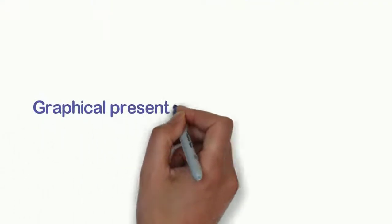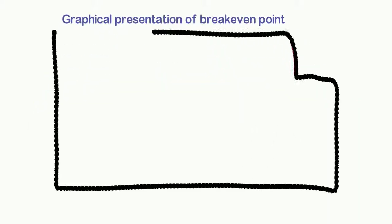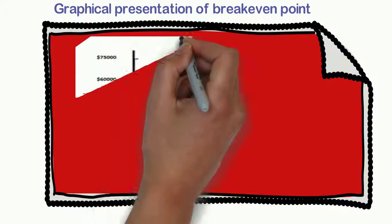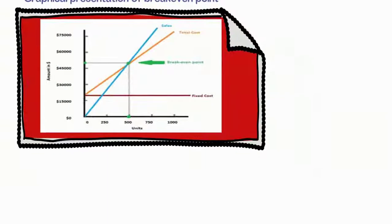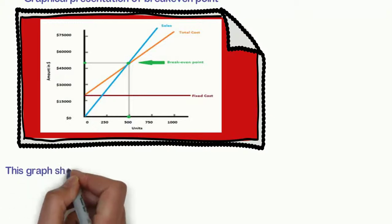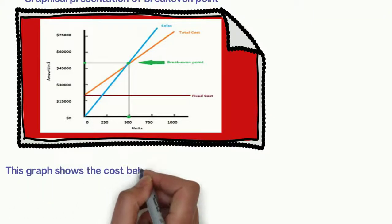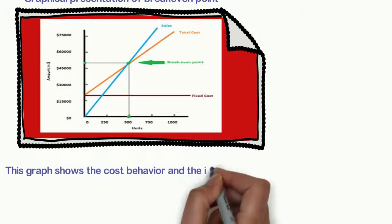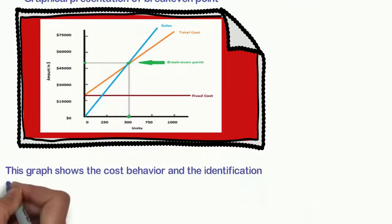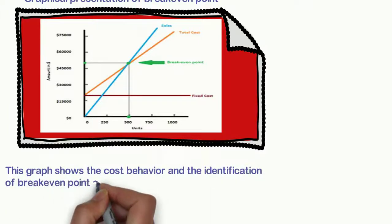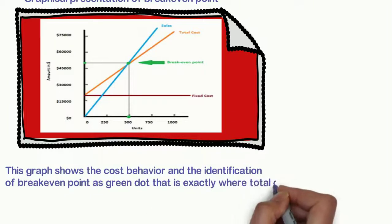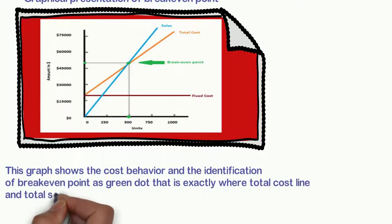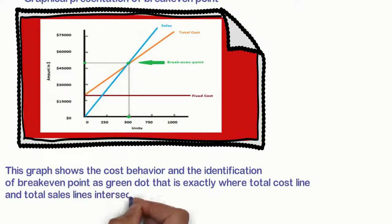Graphical presentation of breakeven point. This graph shows the cost behavior and the identification of breakeven point as green dot that is exactly where total cost line and total sales lines intersect.